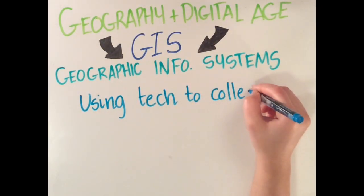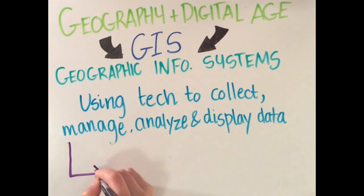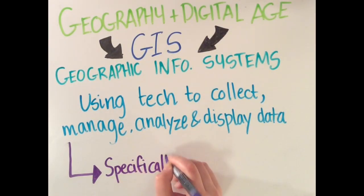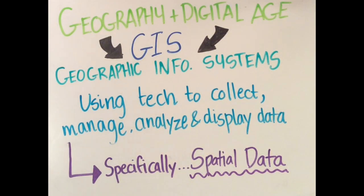GIS is the use of technology to collect, manage, analyze, and display data. Unlike other data management platforms, GIS technology allows for spatial components of the data, like their locations or extents, to be a component of the analysis.